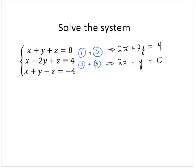So now what I'm going to do is I'm going to subtract these equations. If I call these equations 4 and 5, now I'm going to take equation 4 and subtract equation 5. 2x minus 2x is 0, 2y minus negative y is 3y, and 4 minus 0 is 4. And so dividing by 3, y equals 4 thirds.